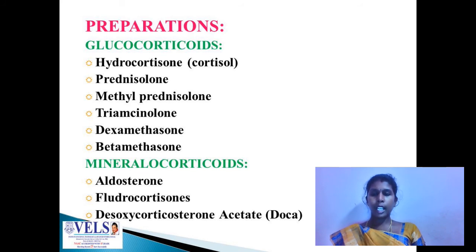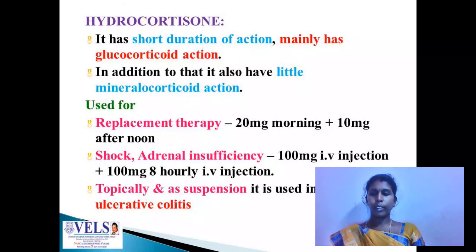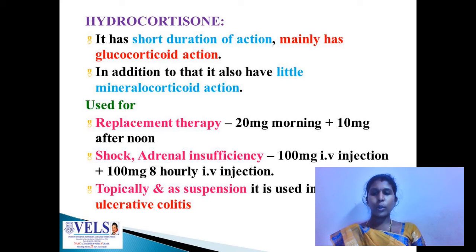Hydrocortisone has a short duration of action and mainly has glucocorticoid action, with some additional mineralocorticoid action. It is used in replacement therapy, shock, and adrenal insufficiency, and is also available in topical and suspension forms. The dosage for replacement therapy is 20 mg in the morning plus 10 mg in the afternoon. For adrenal insufficiency or shock, it is given as 100 mg IV injection, repeated 8-hourly.